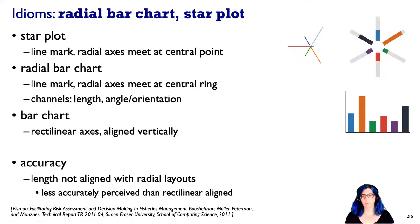First let's start with just the direct analogs of a bar chart in a radial mode. In a star plot you basically have a mark that's a line and the radial axes all meet at a central point. In a radial bar chart we still have a line mark but the radial axes are meeting in some central ring. So structurally, instead of having a bar chart with rectilinear axes and vertical alignment of those heights, we're now distributing these bars around in a circle.